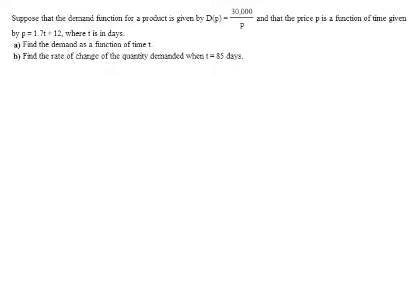So the first part is we're asked to find demand as a function of t. What they're asking us to do is compose the functions together. So this formula for p, p equals 1.7t plus 12, we're going to substitute that in for the p in our demand equation.